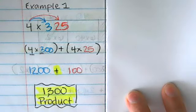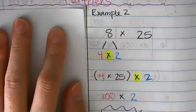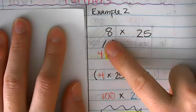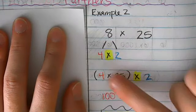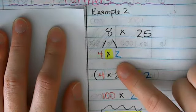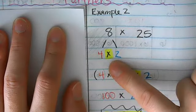I'm going to give you one other example. The next example is 8 times 25. What I'm going to do is break 8 up into two factors that multiply together to make 8: 4 and 2.